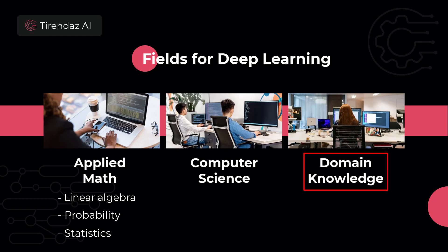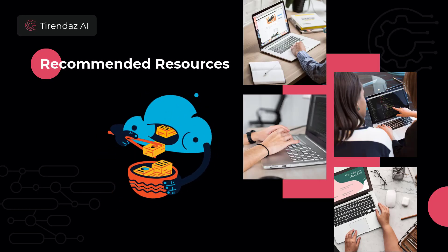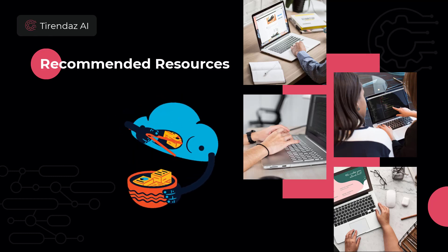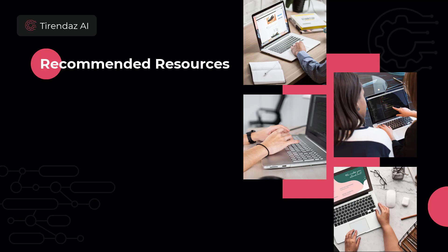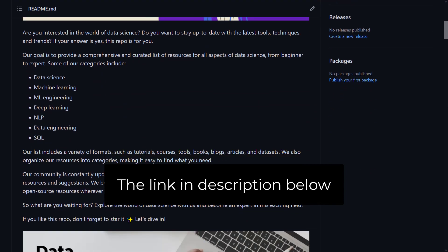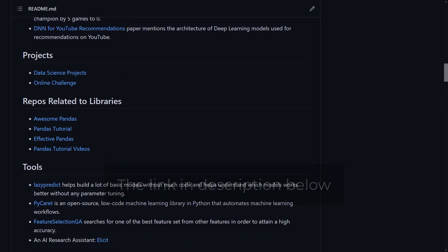We briefly talked about the important areas for deep learning. Finally, let's move on to resource recommendations. Everyone has a different way of learning — some like to learn by watching videos, and some by reading. There are many resources for deep learning, both video and written. I'm trying to collect these resources on our GitHub page called Resources for Data Science. In this section, I'd like to talk about the books that I love to read.